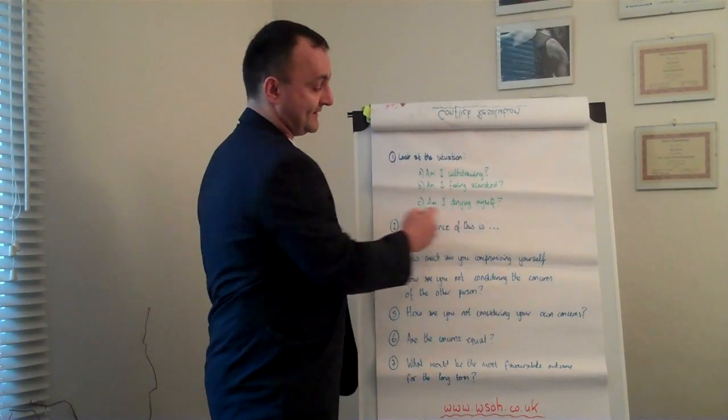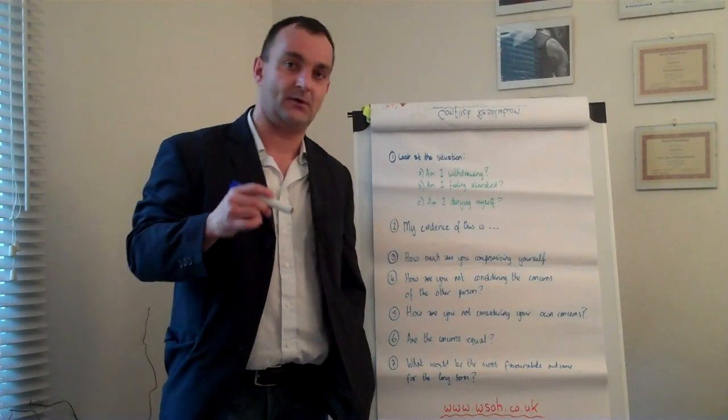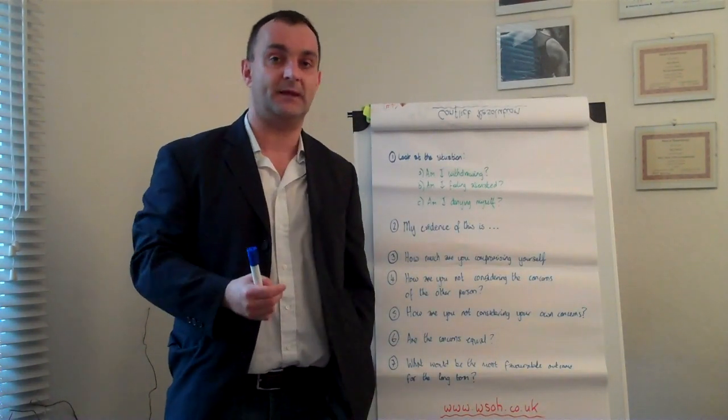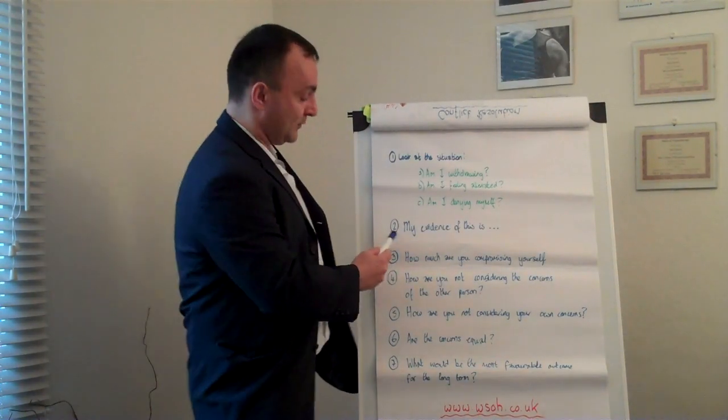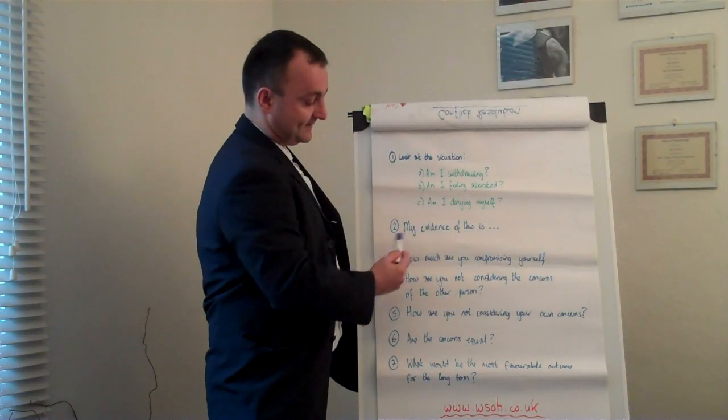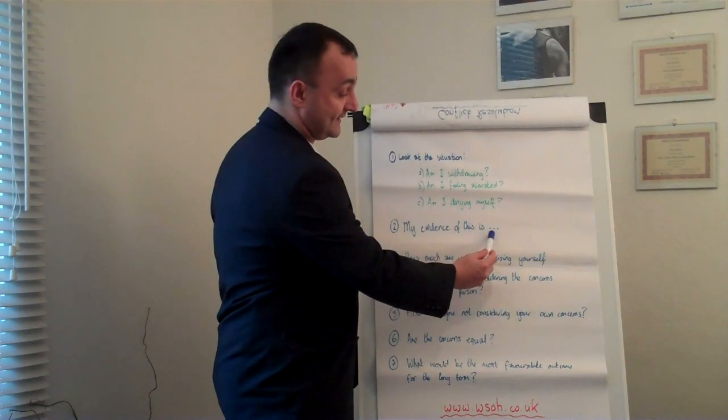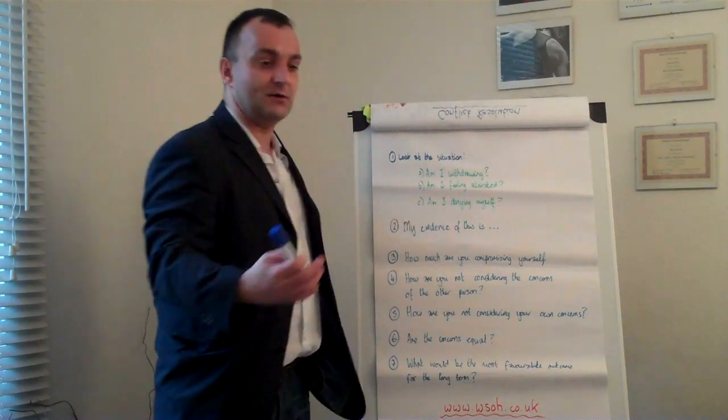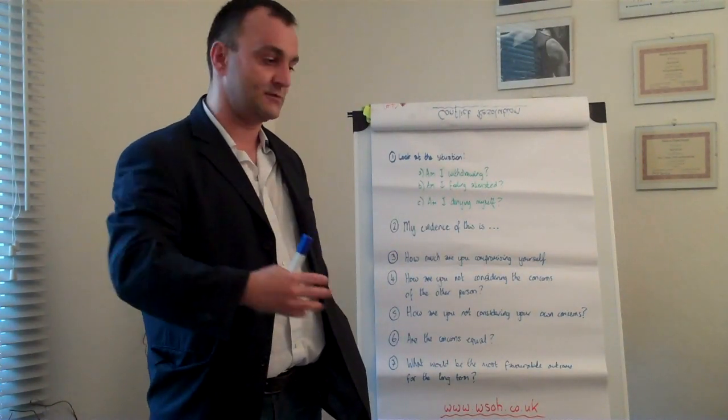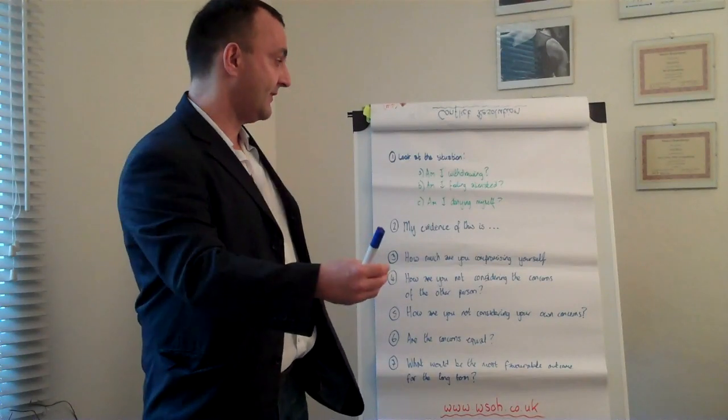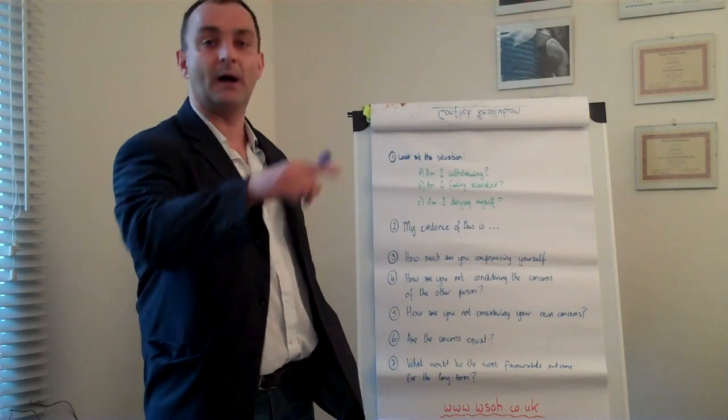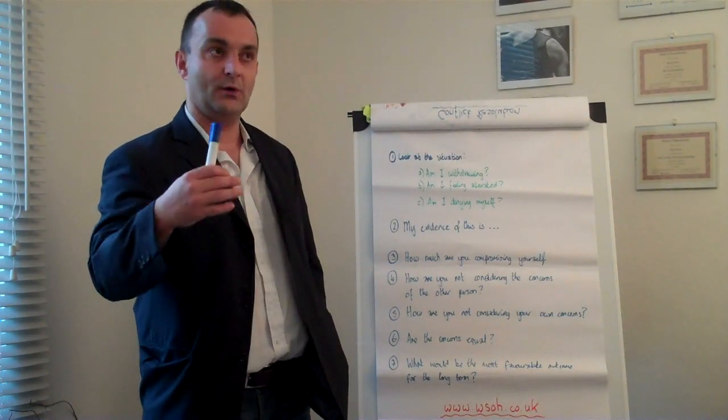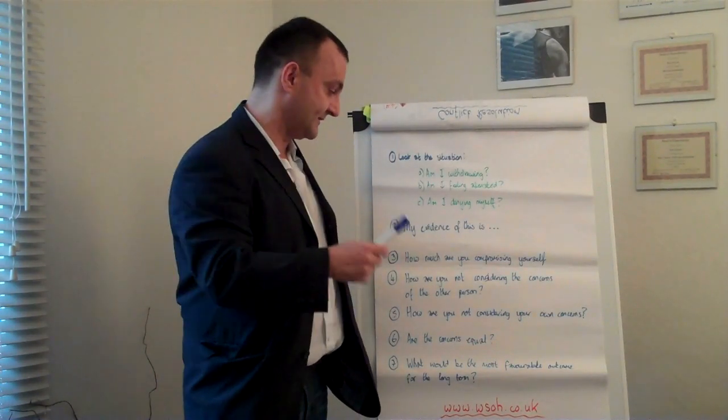Am I denying myself? Are you denying yourself the things that you want, the things that are going to make you happy? Then you look for the evidence of these things. You can find evidence of withdrawing, evidence of feeling alienated. You might feel that whenever you're in that social group, work group, or relationship, you find yourself not feeling part of that. Your evidence might be how you feel, a feeling in your stomach, or that you automatically leave the room when that person comes in.